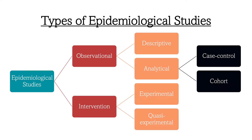There are three major types of epidemiological studies: descriptive, analytical, and intervention. Descriptive and analytical studies are observational studies which help us to understand the causes of disease.